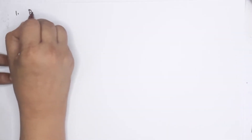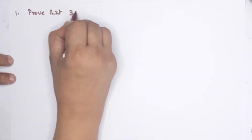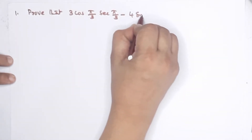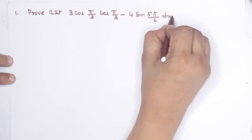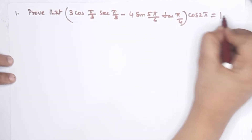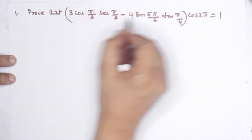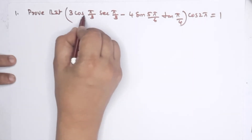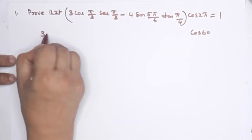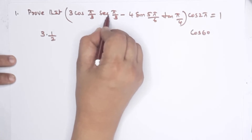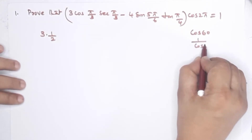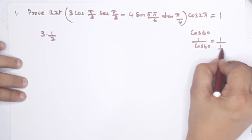First question: Prove that 3cos(π/3)·sec(π/3) − 4sin(5π/6)·tan(π/4)·cos(2π) = 1. Now we will prove it using the same angles. Cos(π/3) means cos60, which is 1/2, so 3 into 1/2. Sec(π/3) means 1/cos60, that means 1 divided by 1/2.